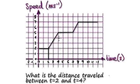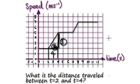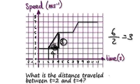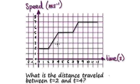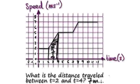So we need to work out the area here. You can split this up: this area here is 4, the height is 3, the width is 2. So 3 times 2 equals 6, divided by 2 because it's a triangle, equals 3. So this rectangle is 4, this triangle is 3, so the total area is 7. The area here is 7, so the distance traveled is 7 meters.